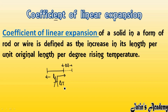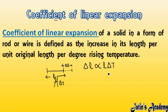Initially the rod is at normal room temperature, but when we give heat to it, there is an increase in its length delta L, with delta T being the change in temperature. This increase in length is directly proportional to the original length and also directly proportional to the change in temperature. In numerical work, we replace the proportional sign with an equals sign by introducing a constant.